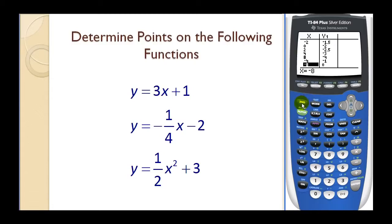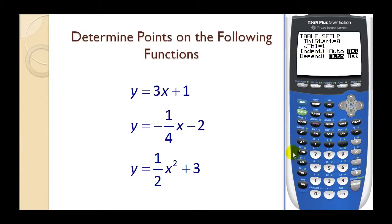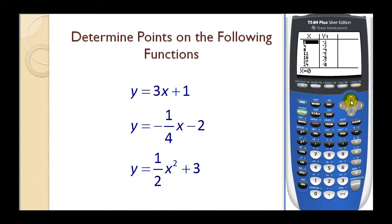If we go back to the table set, we could start the table at zero and have the change in the table be multiples of four, then change it to automatic, and go back to the table. You can see now we have nice integer points that we could plot on paper if needed. It's really your preference whether you like the ask or the automatic mode, depending on what you're doing.